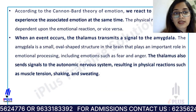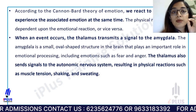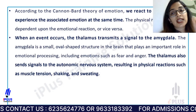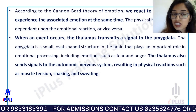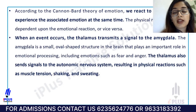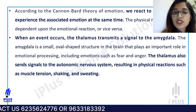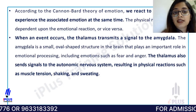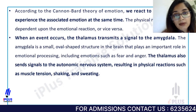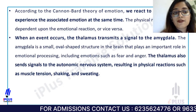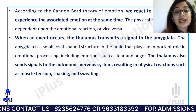According to Cannon-Bard theory, we experience a stimulus and the associated emotion at the same time. One stimulus node reacts and triggers an emotional reaction simultaneously. The thalamus sends a signal to the amygdala — an oval-shaped structure in the brain with an important role in emotional processing, including fear and anger. Physical reactions such as sweating, muscle tension, and shaking occur alongside the emotional experience.